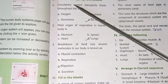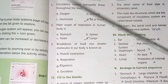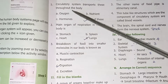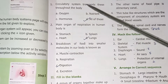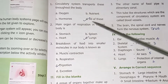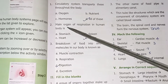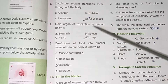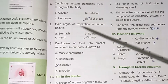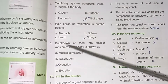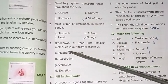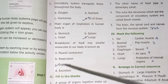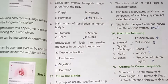Promoter 1: Choose the appropriate answer. The circulatory system transports these throughout the body. The main organ of respiration in the human body is the lungs. Breakdown of food into smaller molecules in our body is known as digestion.